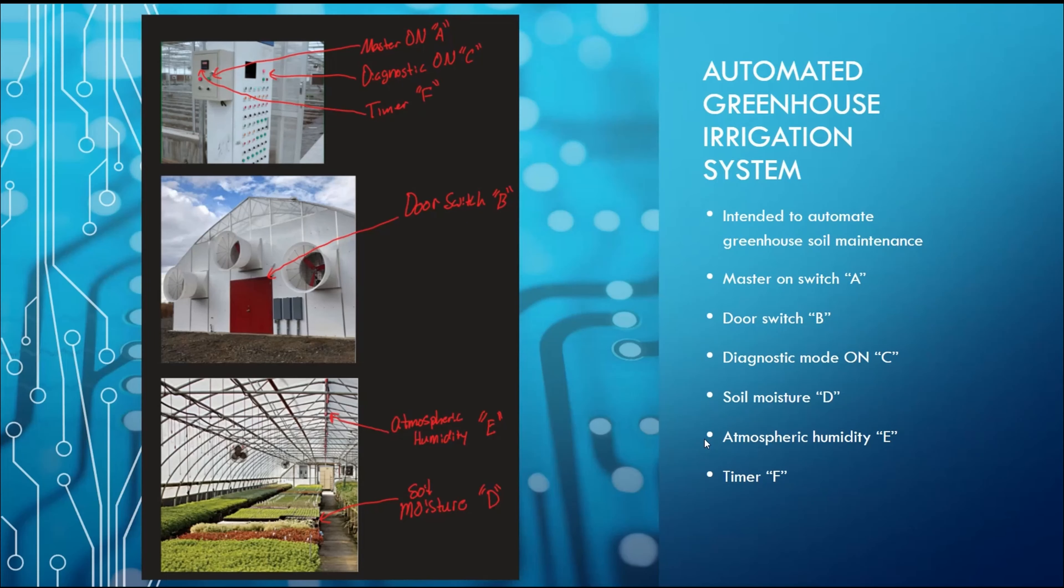My name is CJ Turner and we have created an automated greenhouse irrigation system. Our project is intended to automate greenhouse soil maintenance and increase overall efficiency by reducing unnecessary run time.